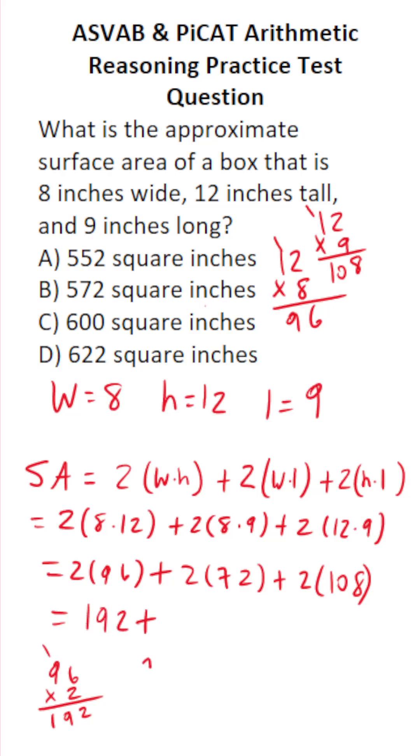Plus let's do 72 times 2 right here. 2 times 2 is 4. 7 times 2 is 14. So that's 144.